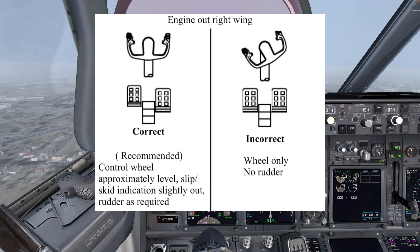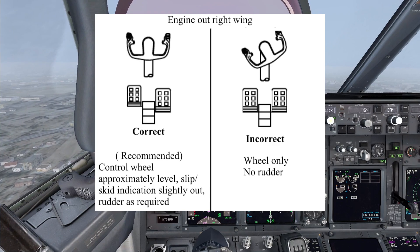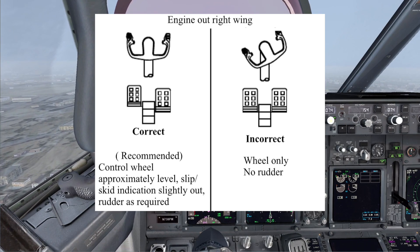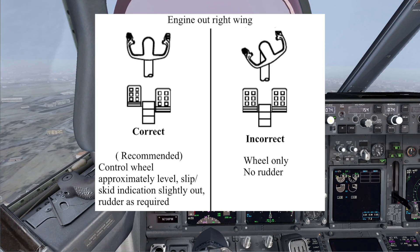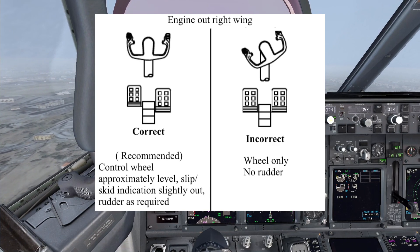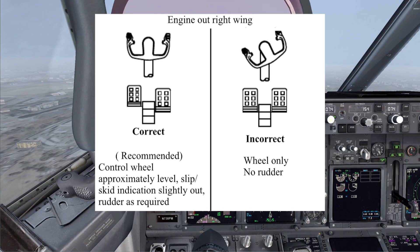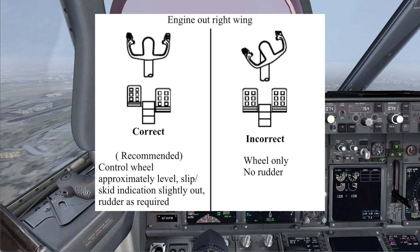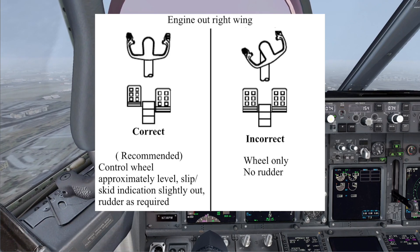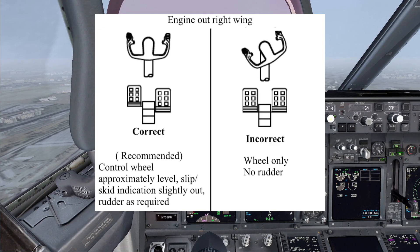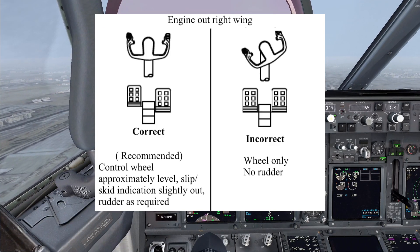While applying thrust, it is very important to simultaneously apply positive pressure on the rudder to assist the autopilot. Bring the control wheel back to approximately the centered position.